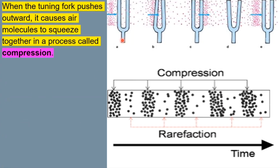So imagine a tuning fork. When the tuning fork pushes out, it squeezes the air molecules together in the process called compression. And then when the tuning fork sucks back, the air molecules, as a consequent, become rarefied or more spread out. And this is a chain reaction that just proceeds over space and time.